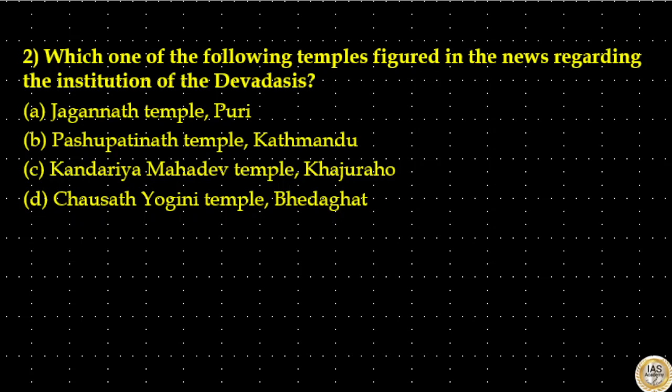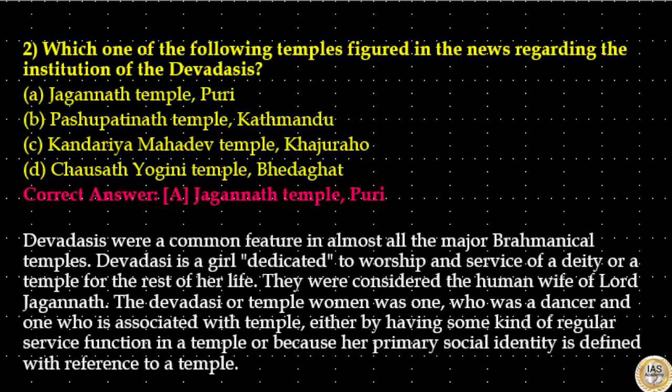The answer to this question is option A: Jagannath temple, Puri. Devadasis were a common feature in almost all the major Brahmanical temples. A Devadasi is a girl dedicated to the worship and service of a deity or a temple for the rest of her life. They were considered the human wife of Lord Jagannath.